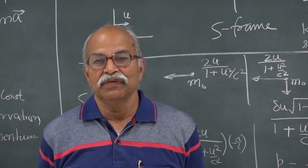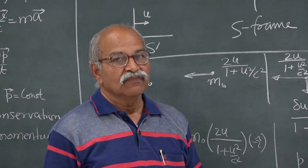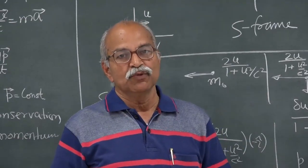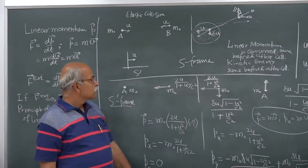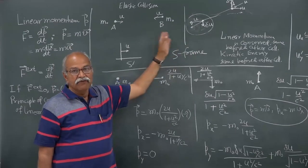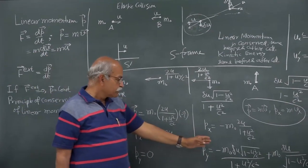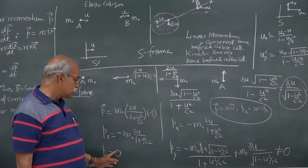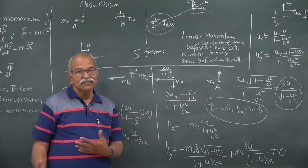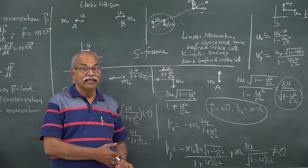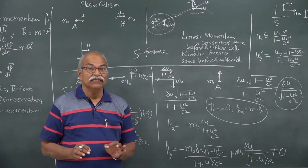We had seen that the usual definition p equal to mass times velocity does not work well with Lorentz transformation. We took a simple example of elastic collision between two particles of equal mass and found that in S frame the linear momentum is the same before and after the collision, but in S prime frame the linear momentum before the collision was 0 in the y direction and after the collision it is not 0. So the law of conservation of linear momentum is valid in S frame but not valid in S prime frame, which is against the principle of relativity that laws of physics have the same form in all inertial frames.